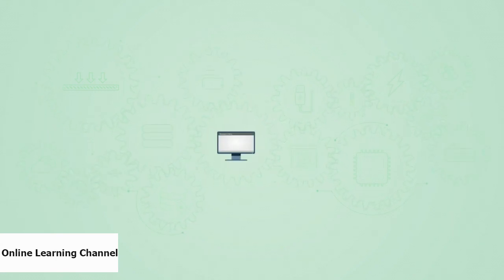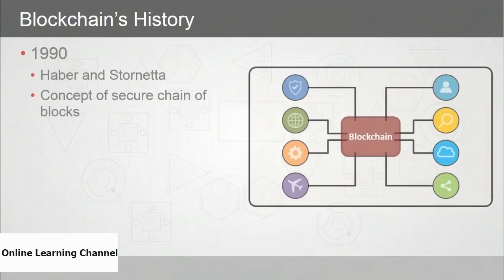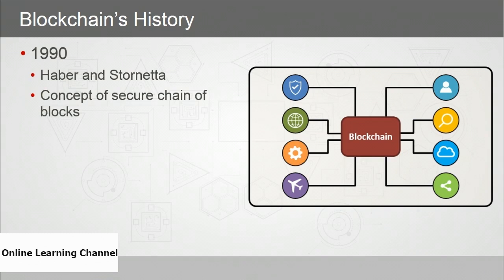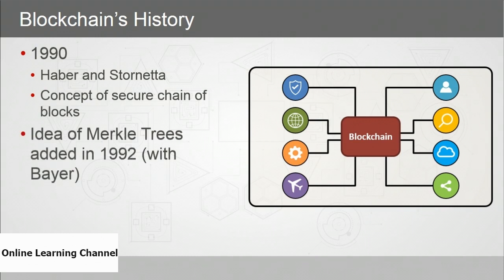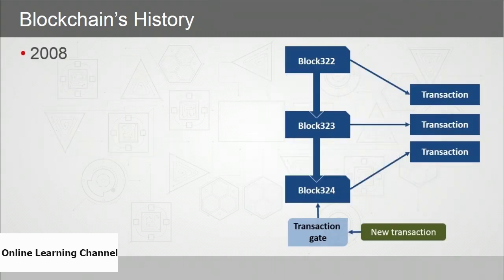Blockchain isn't a new idea. It was conceptually introduced in 1990 when Stuart Haber and W. Scott Stornetta wrote about the concept of a chain of blocks secured with encryption. In 1992, along with Dave Bayer, they added the idea of Merkle trees, which allowed blocks to contain multiple records. But it wasn't until 2008 that blockchain went from concept to implementation.